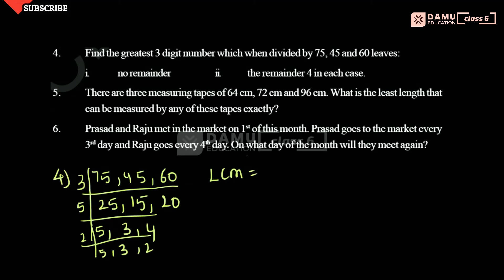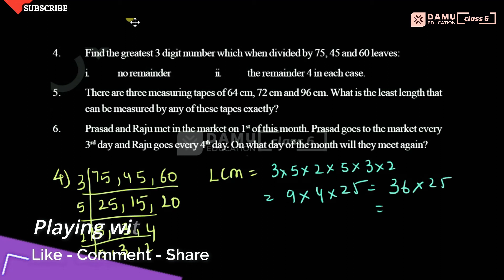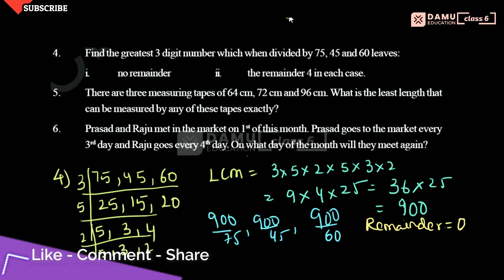So the LCM calculation gives us 3 squared into 2 to the power 4 into 5 squared, which is 9 into 4 into 25, giving us 900. So if you divide 900 by 75, or 900 by 45, or 900 by 60, you will always get remainder 0 — meaning 900 is completely divisible by all these numbers.